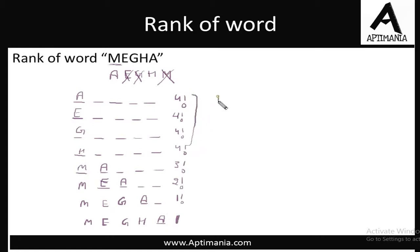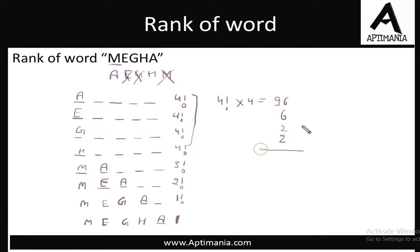The rank of this word is: 4 factorial into 3, plus 4 factorial, plus 3 factorial, plus 2 factorial, plus 1 factorial into 2. So 4 factorial into 3 is 72, plus 24 is 96, plus 3 factorial which is 6, plus 2 factorial which is 2, plus 2 — giving a total of 102, 104, and 106. So this word appears at the 106th position in the dictionary.